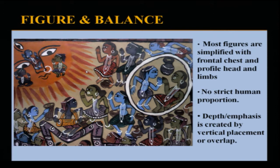Their pictures show depth or emphasis by vertical placement. The sun is emphasized by its separate placement from the rest of the painting and by the directionality of the eyes of the other figures in the right and bottom corner pointing towards the sun.